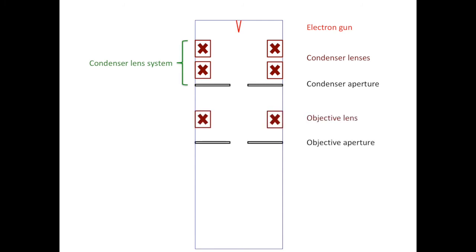After the condenser lens system, we have the objective lens and objective aperture. This gives us the objective lens system. By changing the strength of the objective lens, you can make the image in focus or out of focus.